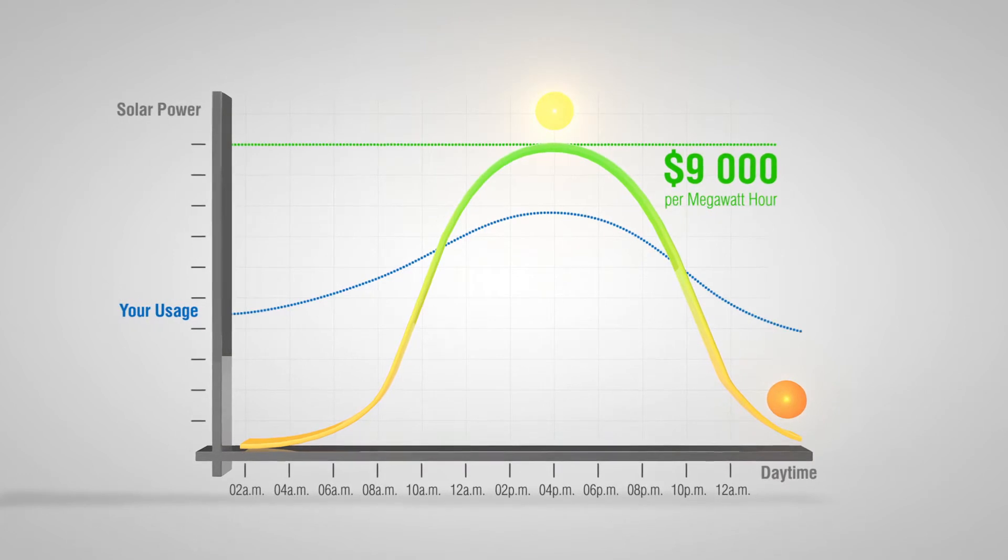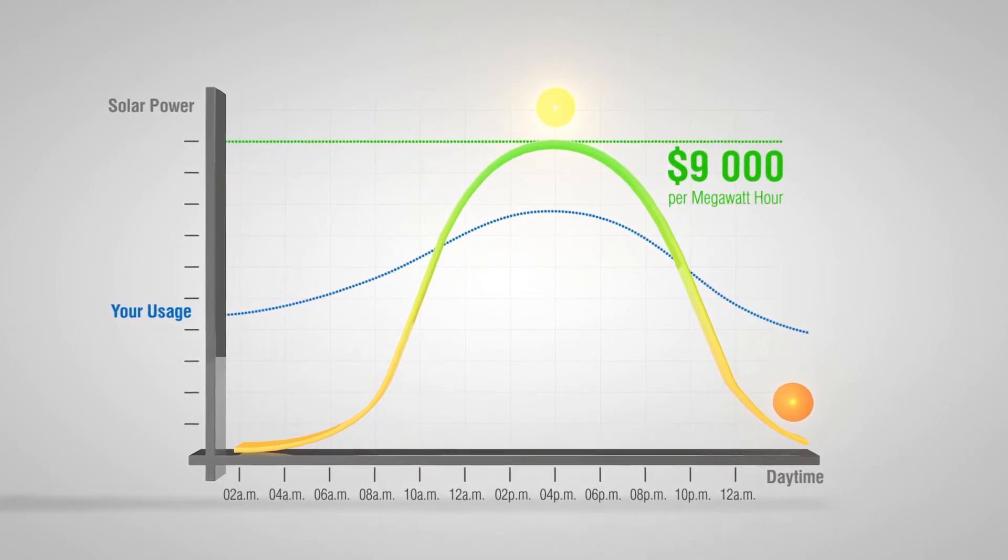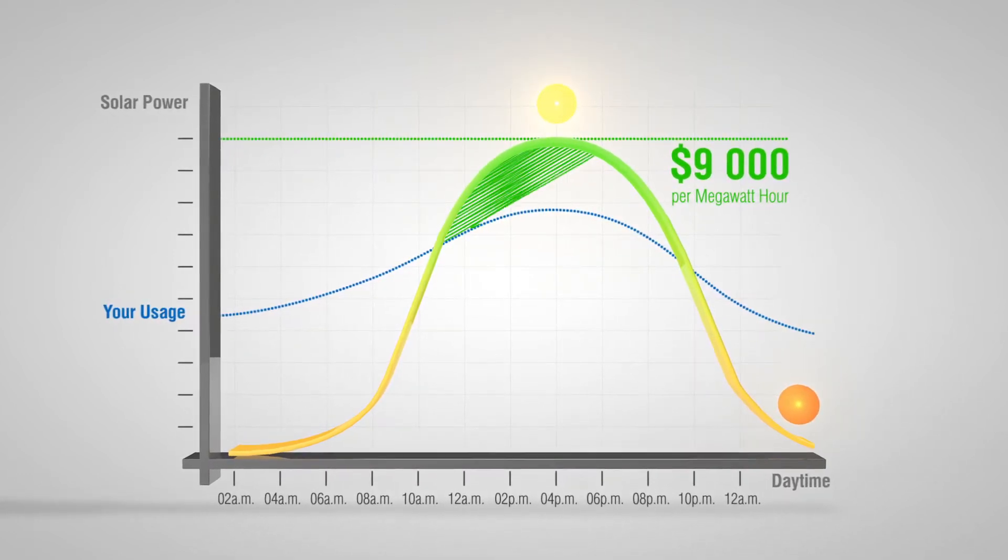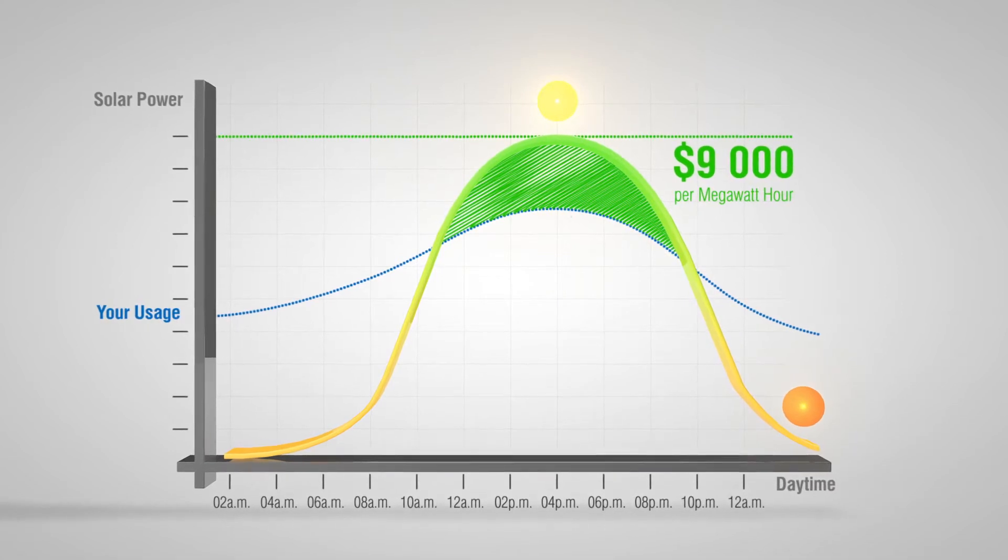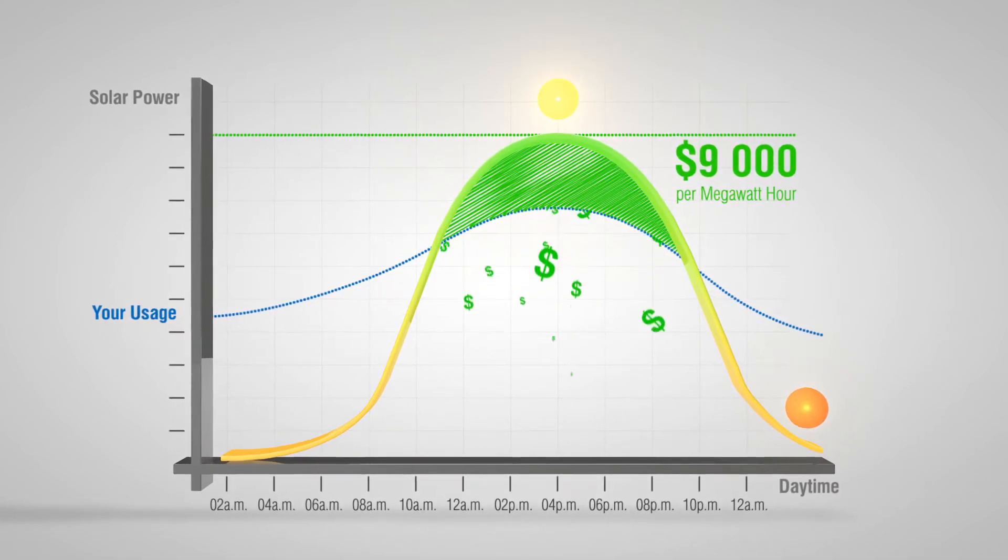So not only are you avoiding buying expensive power from the grid when prices go high, but if you have excess generation that you can sell into the grid, then you can make money during those high price periods.